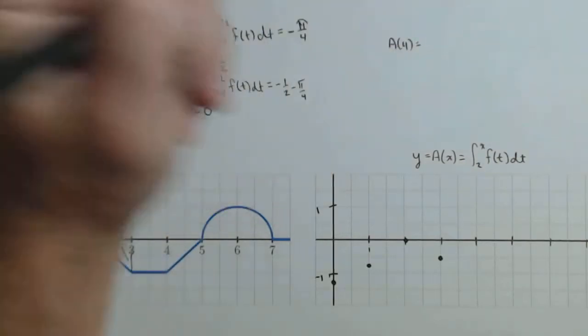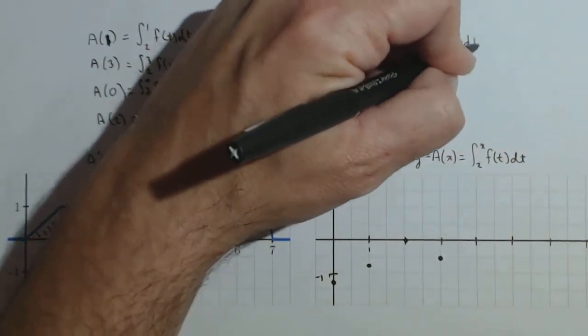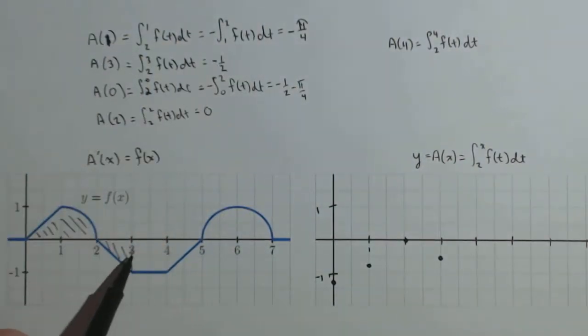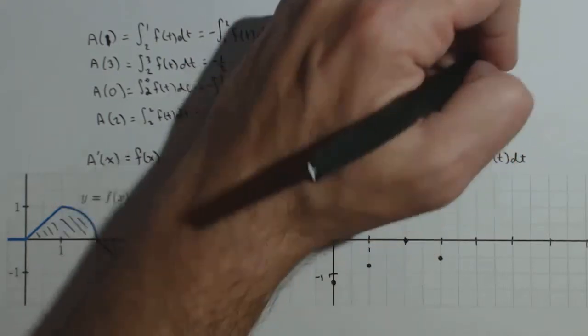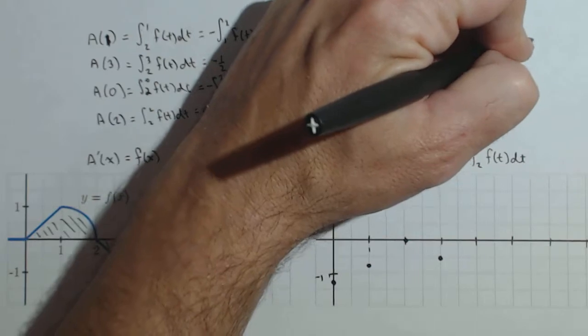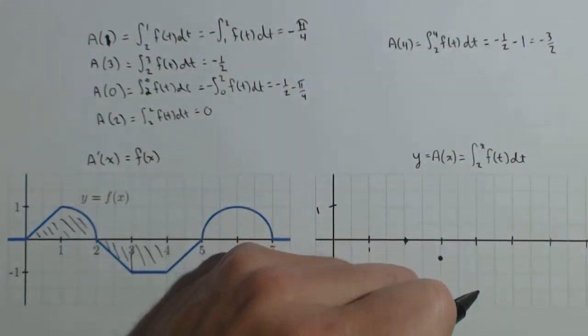A(4), we're doing from 2 to 4 of f(t)dt. Now remember, we already found 2 to 3 right here. So it's a negative 1 half plus the accumulation from 3 to 4, which is negative 1. So negative 1 half minus another 1 is negative 3 halves, or negative 1 and a half. So right here's our point.